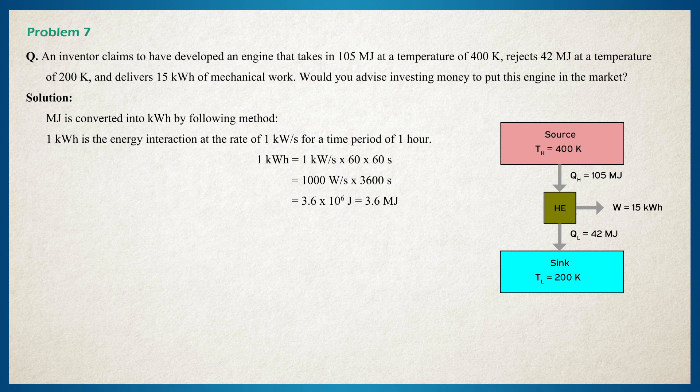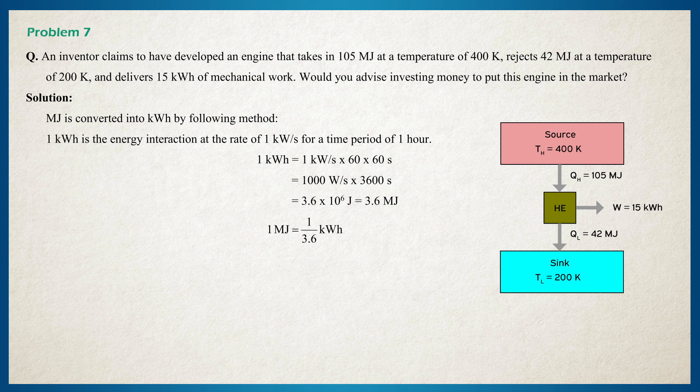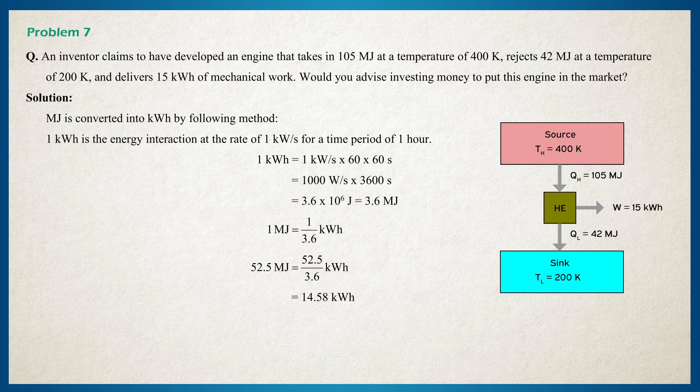So 1 megajoule is equal to 1 by 3.6 kilowatt hours. So 52.5 megajoules is equal to 52.5 divided by 3.6 kilowatt hours, which is equal to 14.58 kilowatt hours. The engine can deliver 14.58 kilowatt hours ideally.